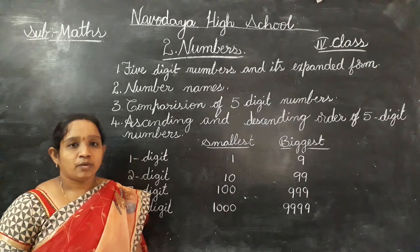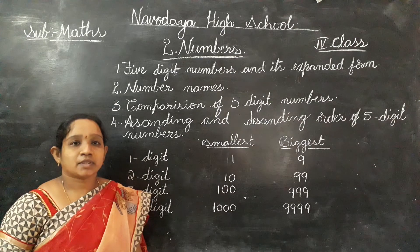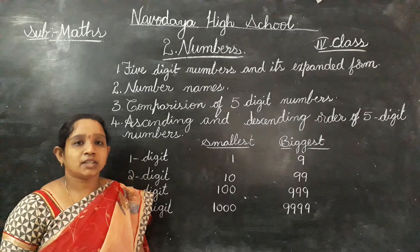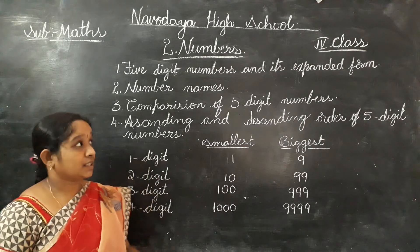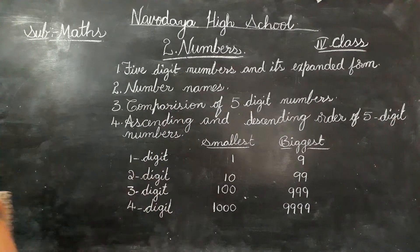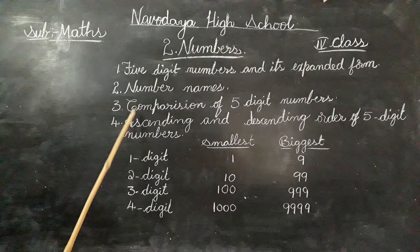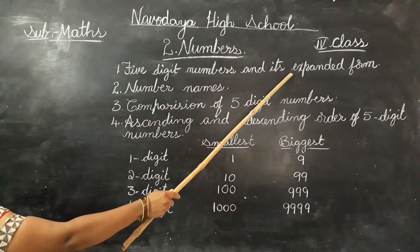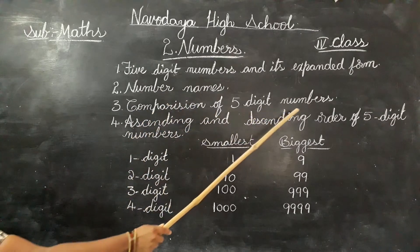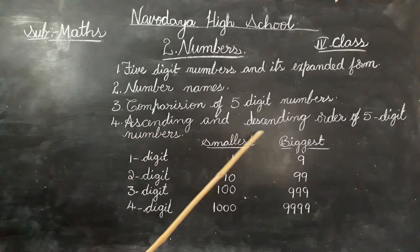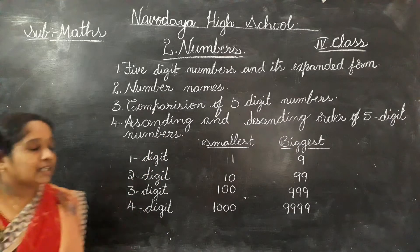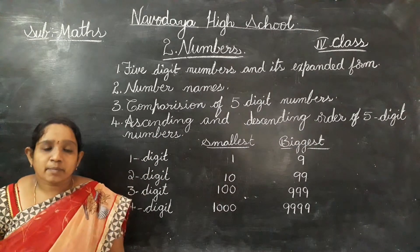Good morning children. We have completed the first chapter, that is Shapes Around You. Now we are going to learn the second chapter, that is Numbers. In this video we are going to learn four topics: five digit numbers and their expanded form, number names, comparison of five digit numbers, and ascending and descending order of five digit numbers.